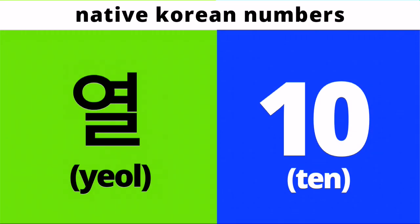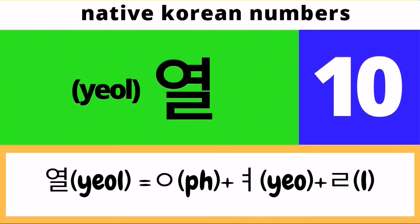The last number for this video is number ten. Its native Korean version is Yul. This is just composed of one syllable, which is Yul. Pronounce it with me: Yul. To write Yul in Hangul, we start with a placeholder Ieung followed by a Yul character. We combine these to form the Hangul of number ten, which is Yul.